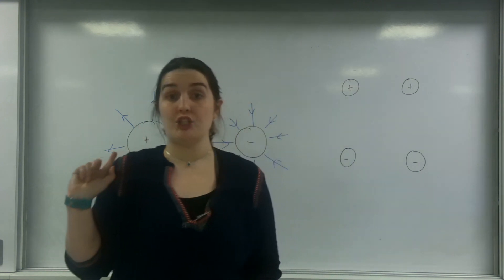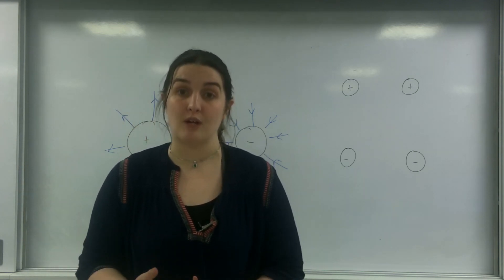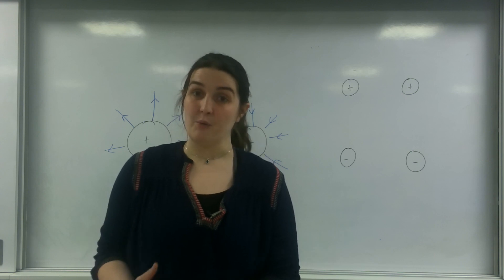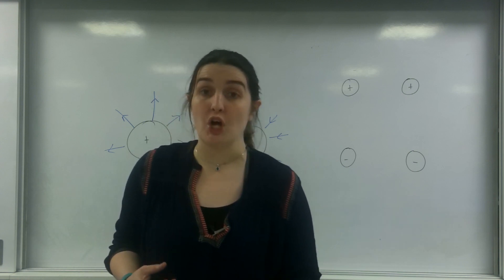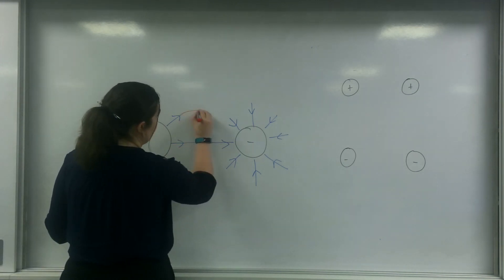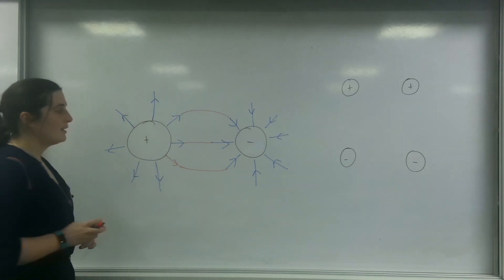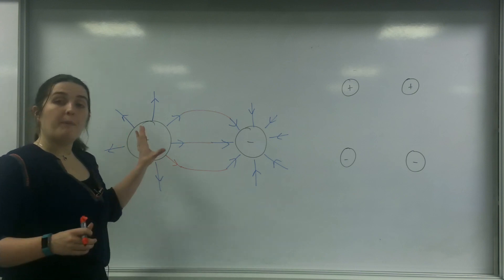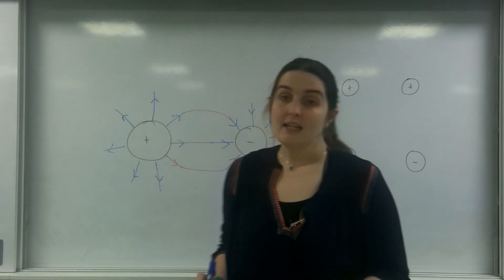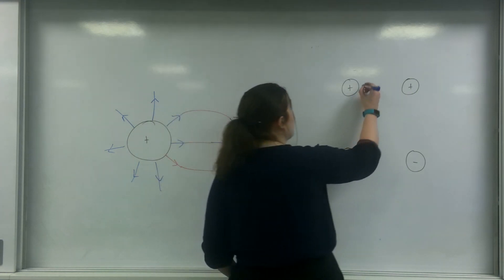Now, when I've got two charges like that, a positive and a negative, remember these field lines are representing the field strength. So there will be regions where the field strength from one will equal the other. And this is where the field lines will start to join up. So this here is what a positive and a negative charge would look like if they were next to each other. And if I was to draw the same thing for opposite charges, I would have something that would look like this.